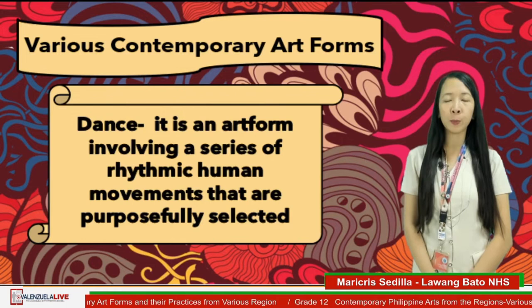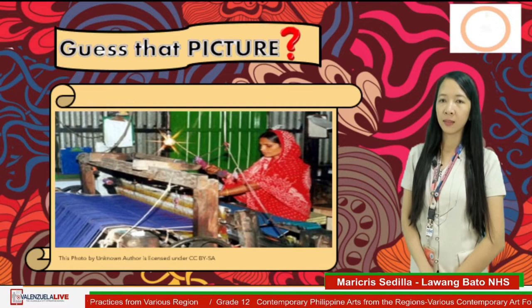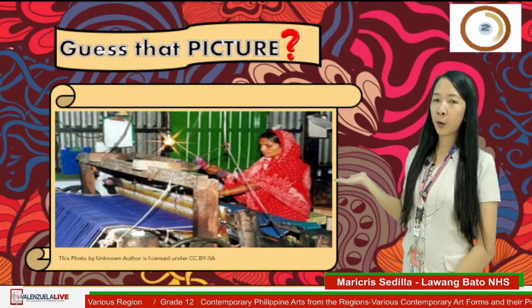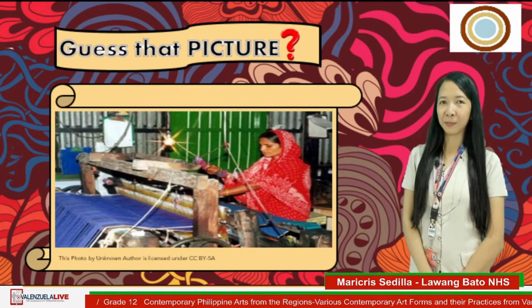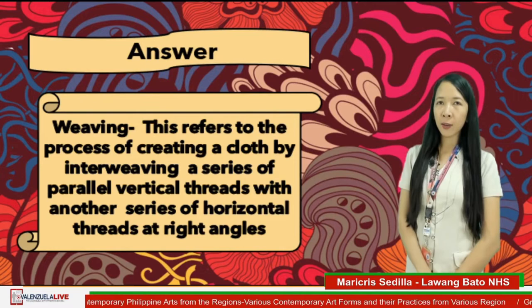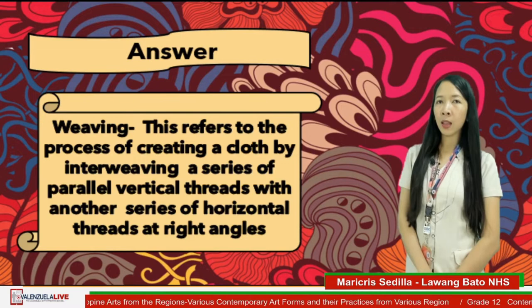Let us have the next slide. The answer is weaving. Weaving refers to the process of creating a cloth by interweaving a series of parallel vertical threads with another series of horizontal threads at right angles.